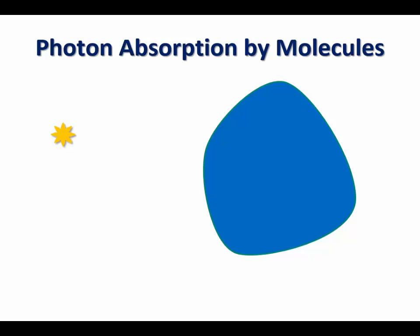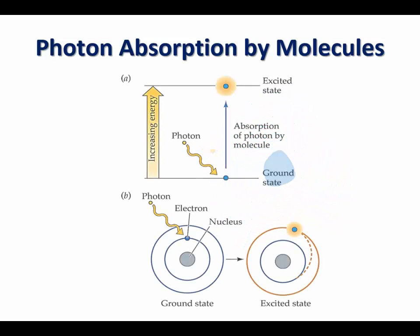Let's look now at what happens when a photon collides with a molecule. When this collision occurs, one of three things could happen. First, the photon may bounce off the atoms of the molecule. Or, the photon may pass through the atoms without colliding with them. And the third option, the photon may collide head-on and its energy absorbed by the atoms of the molecule, and therefore the energy of the photon is acquired by the molecule. When this happens, the electrons that collide with the photons, and therefore absorb photon energy, move to higher energy shells, and are said to move from a ground state to an excited state of higher energy.